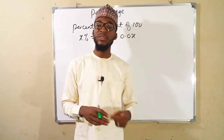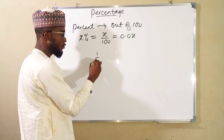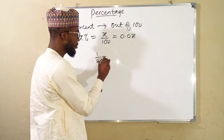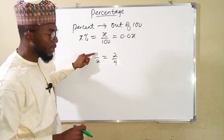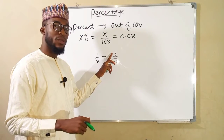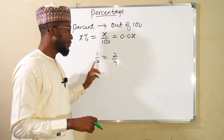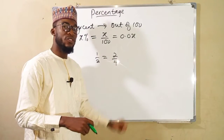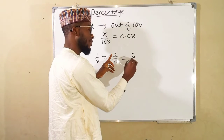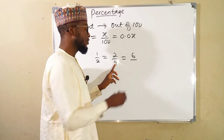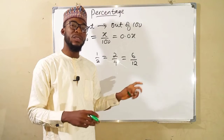Before we start our conversions, let us refresh our memory on equivalent fractions. Suppose we have 1 over 2 — 1 over 2 can be written as 2 over 4, because if you multiply 1 by 2 you obtain 2, and you also multiply the denominator by the same value, 2 times 2 is 4. Similarly, multiplying by 3 gives 6 over 12. All these fractions are equivalent because they simplify to the same value.